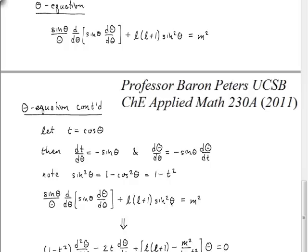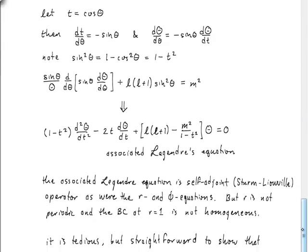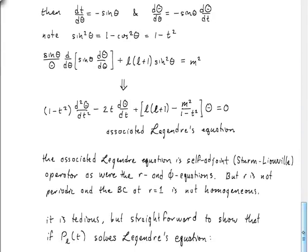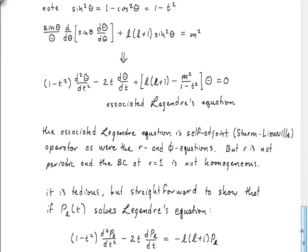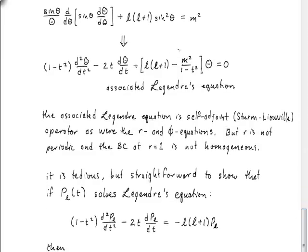What that ends up giving us then is this set of substitutions. Note sine squared is equal to 1 minus cosine squared, which we can then just write as 1 minus t squared. That's useful because there are sine squared terms in this equation. And we can now go through and write this whole equation in terms of the new variable t. This t has nothing to do with the t that we used in solving the r-dependent equation. Again, it's just a variable filling in for cosine of theta here. So this is associated Legendre's equation.